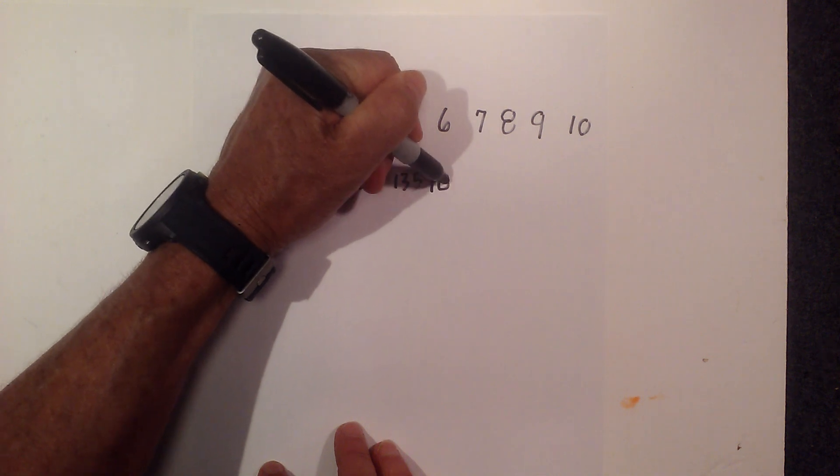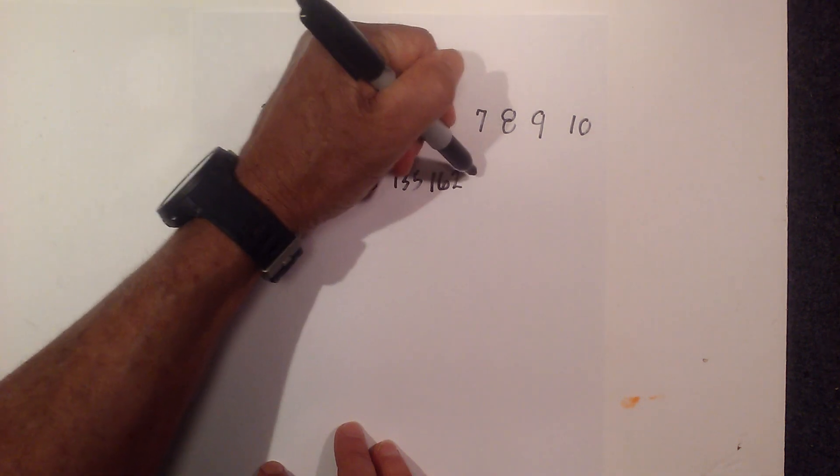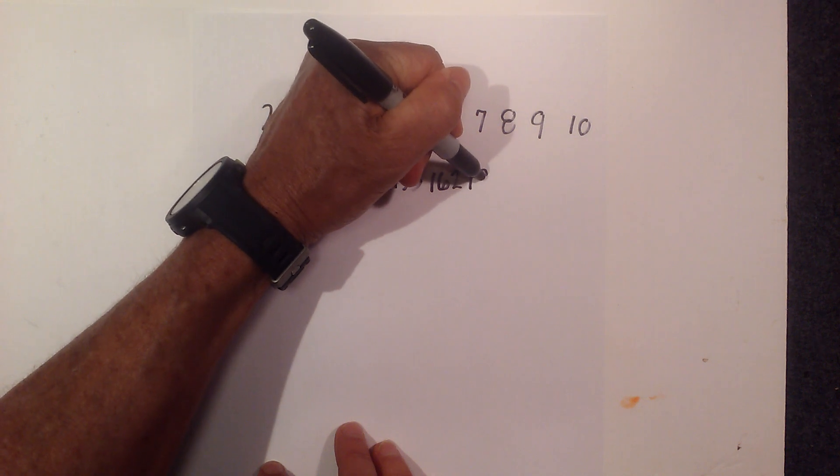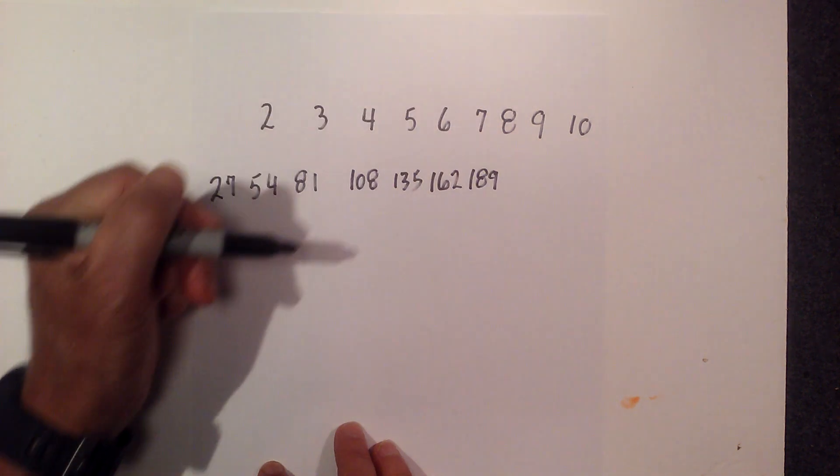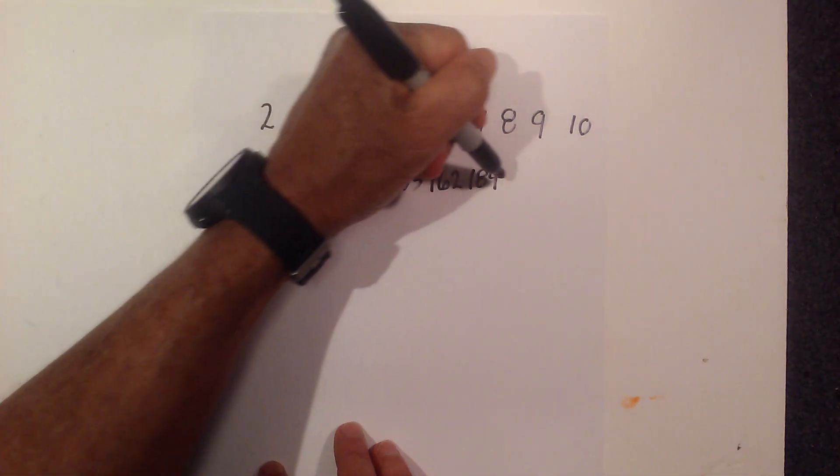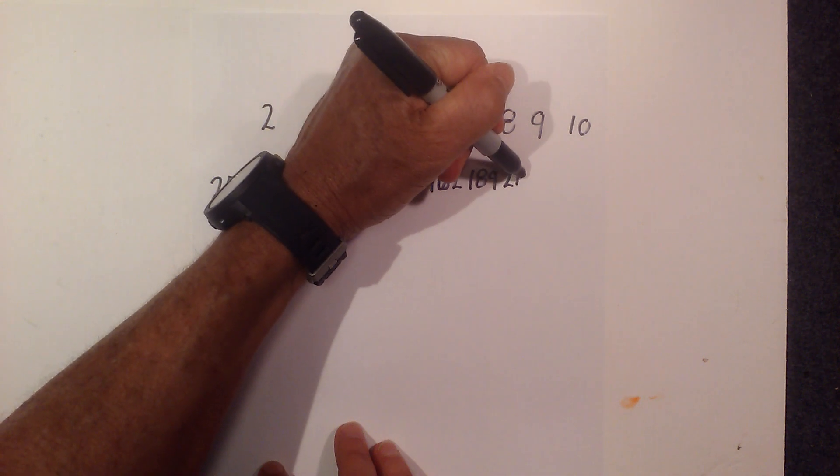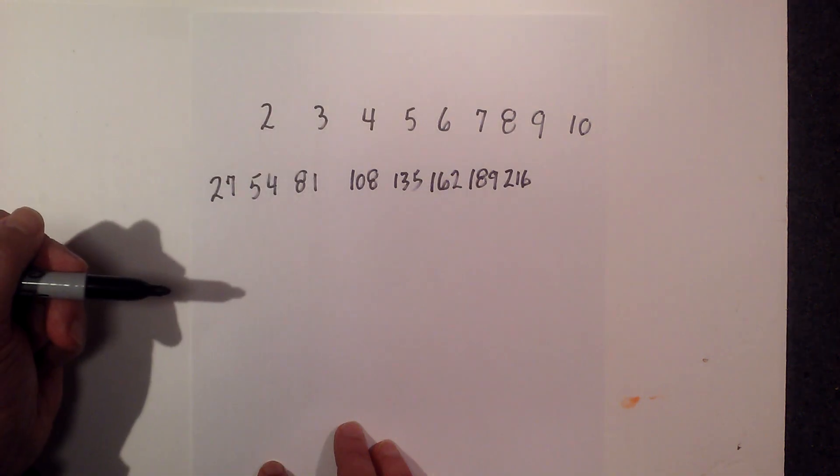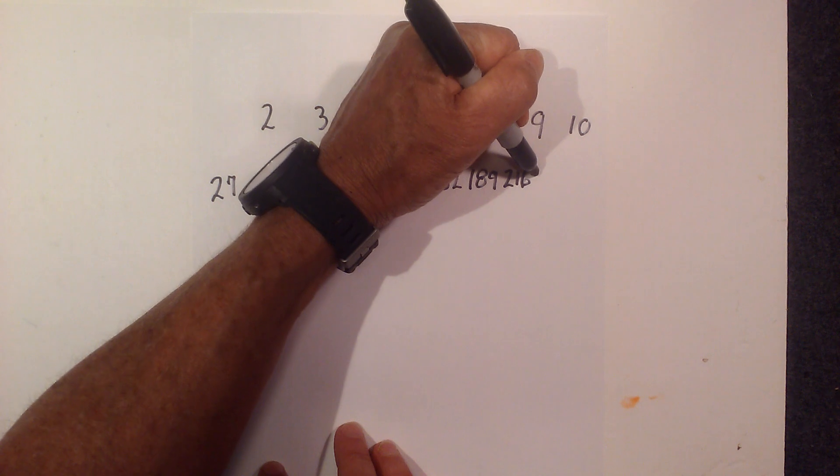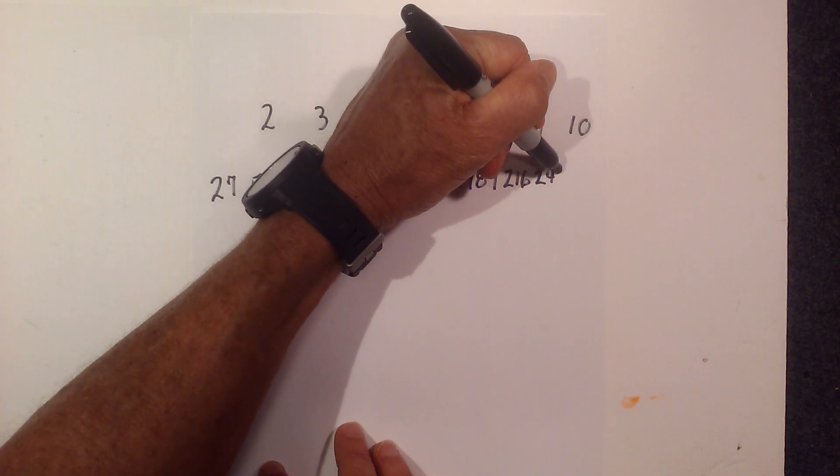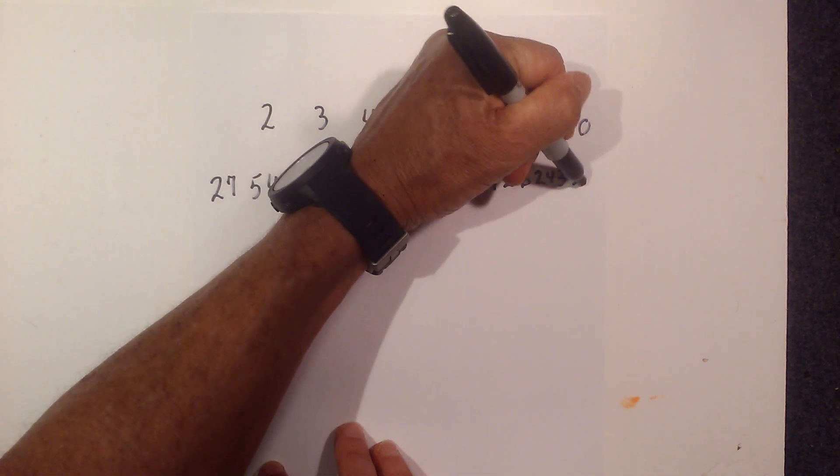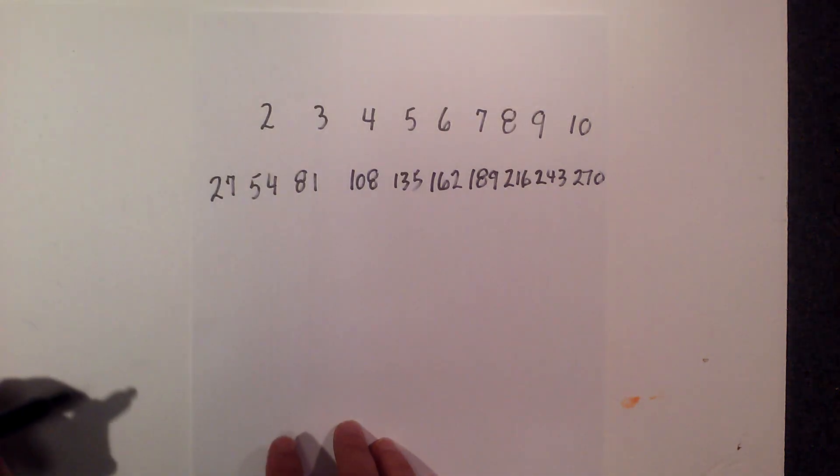Then 162, then 189, running out of room. Then 216, so 27 times 8 is 216. Then 243, and then 27 times 10 is 270.